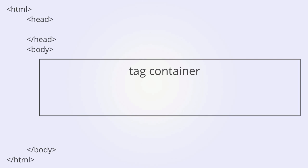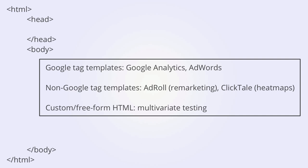Google Tag Manager provides a variety of templates for adding tags to the container. There are templates for Google services such as Analytics and AdWords. There are templates for non-Google services such as AdRoll remarketing or ClickTail heatmapping. And if there is a tag that you want to add for which there is not an existing template within Google Tag Manager, there is a freeform HTML field that will allow you to add those types of tags as well.